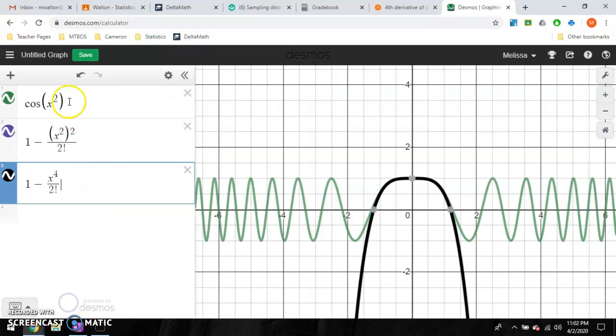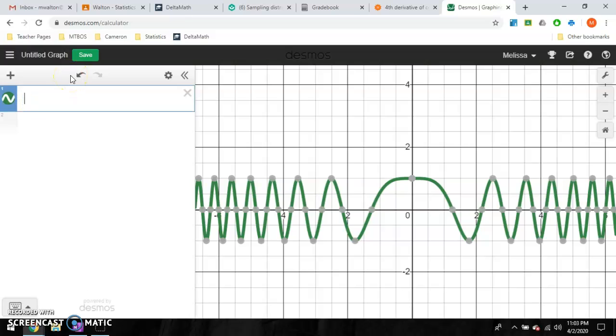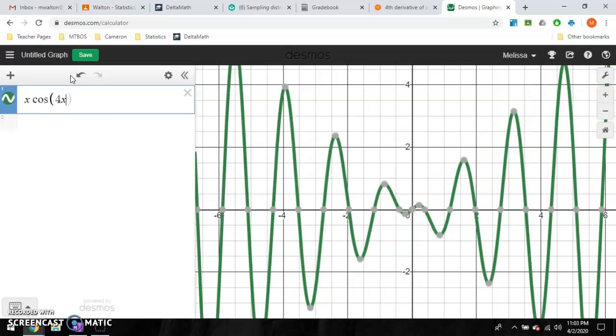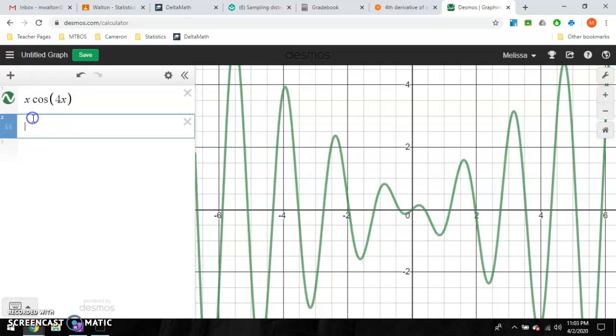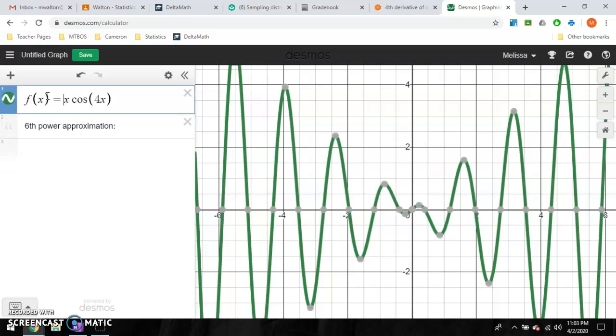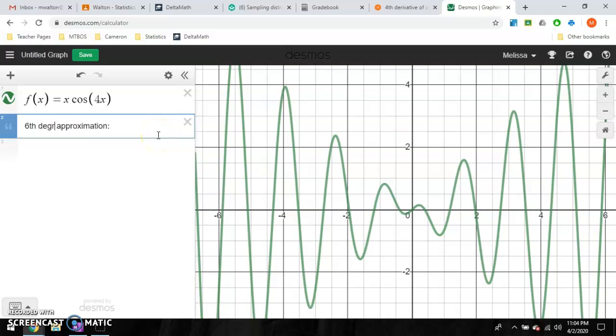So what we can use is we can use known functions and build Maclaurin series off of those known functions. All right. So one more fun one. I'm going to pause the video. I'm going to see what you guys can do. I would like for you guys to write a sixth degree, and I want it to be for x cosine of 4x. Alexa thinks I'm talking to her. I would like for you guys to find a sixth power approximation for f(x) for what I just wrote. So pause the video, see what you can come up with.